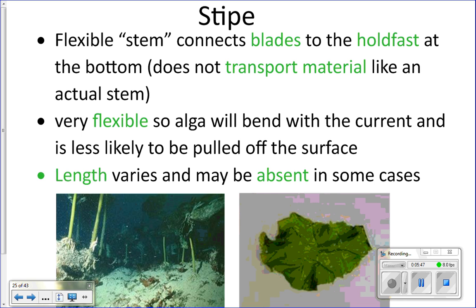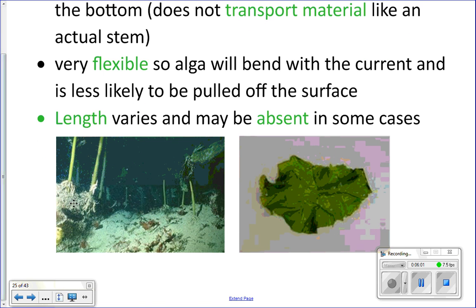The size or even presence of the stipe will vary depending on the type of algae. Some algae have big strong stipes to attach them to a surface, while others like sea lettuce have no stipe at all — just a holdfast attached directly to a blade.